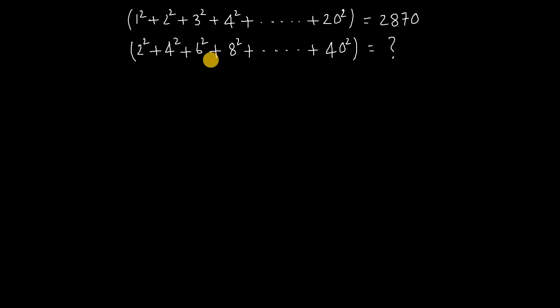So 2² + 4² + 6² + 8² + ... + 40² equals - we can factor each term as (2×1)² + (2×2)² + (2×3)² + ... + (2×20)², which equals 2²×1² + 2²×2² + 2²×3² + ... + 2²×20².